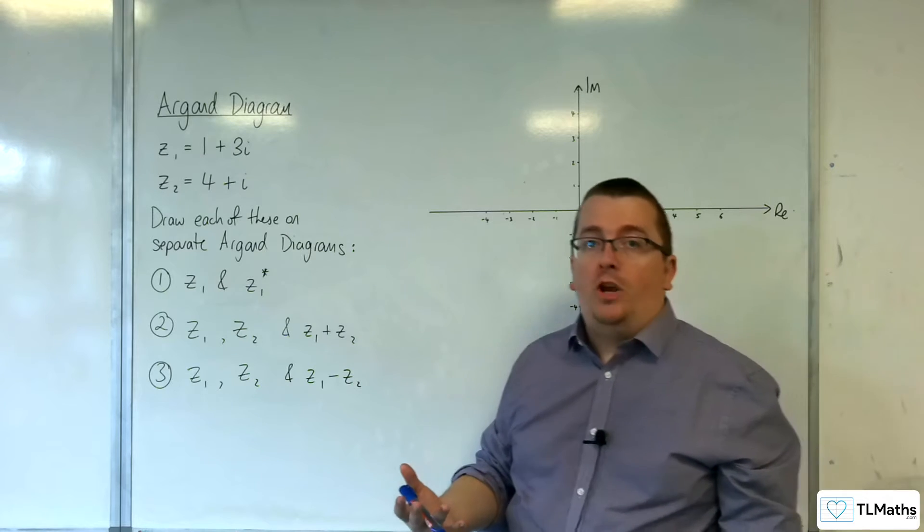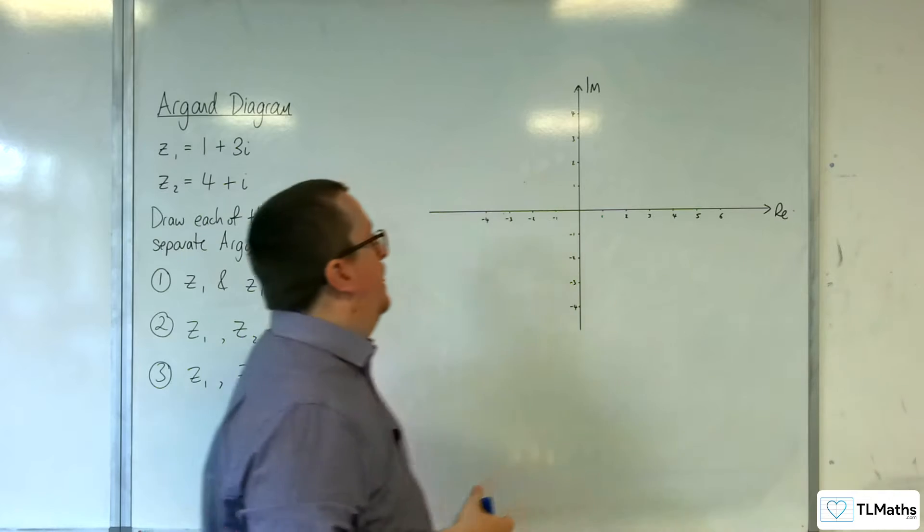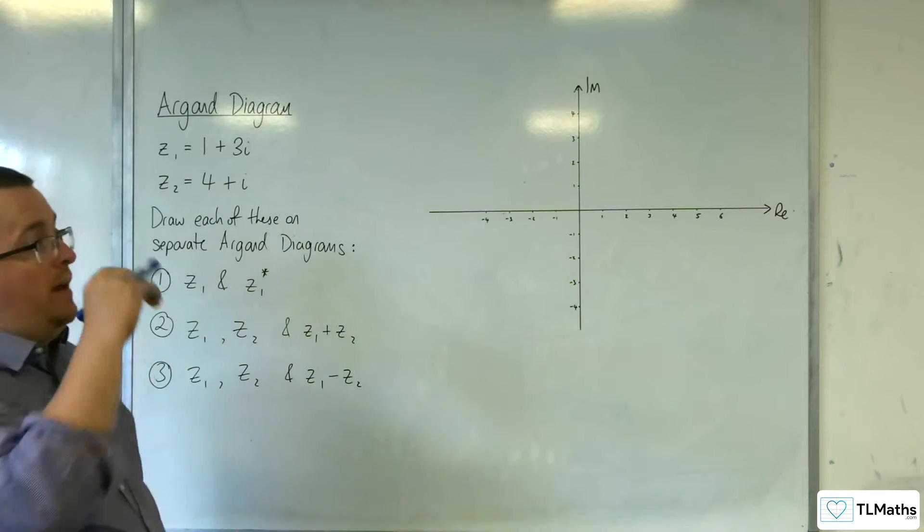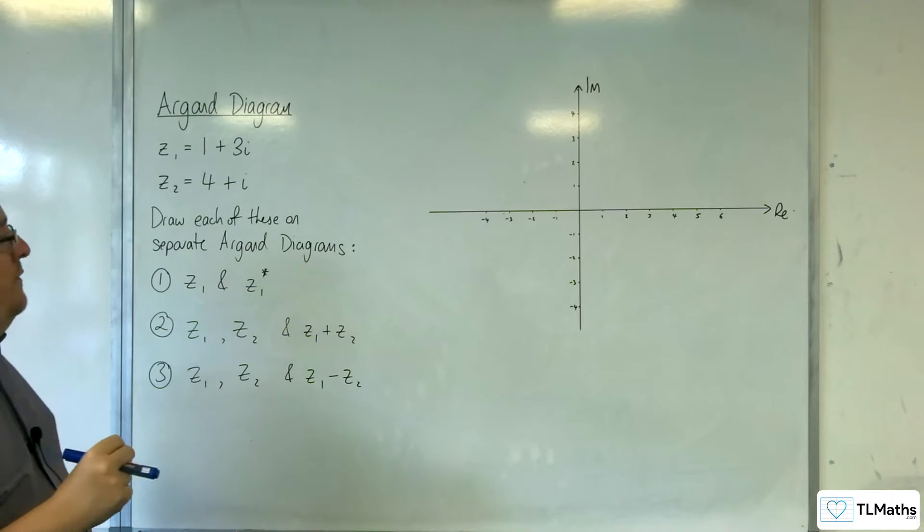You can see the relationship that they have to vectors when we're looking at the Argand diagram. I've got an Argand diagram ready. I'm trying to be fairly accurate here because we're trying to pinpoint parallel vectors.